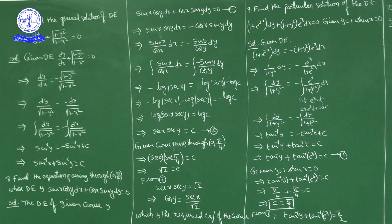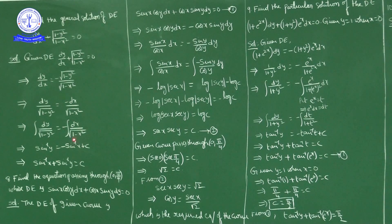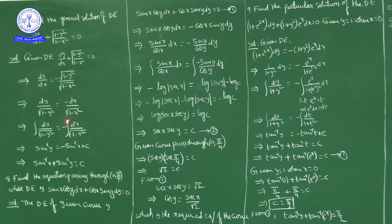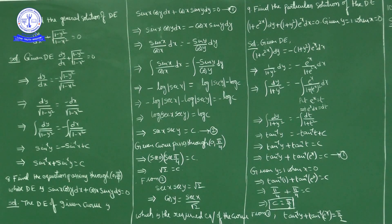Integrating on both sides: ∫dy/√(1 - y²) = −∫dx/√(1 - x²). Using the standard formula, ∫dy/√(1 - y²) = sin⁻¹y and ∫dx/√(1 - x²) = sin⁻¹x. So sin⁻¹y = −sin⁻¹x + c. Writing the minus term to the other side, the final answer is sin⁻¹x + sin⁻¹y = c.